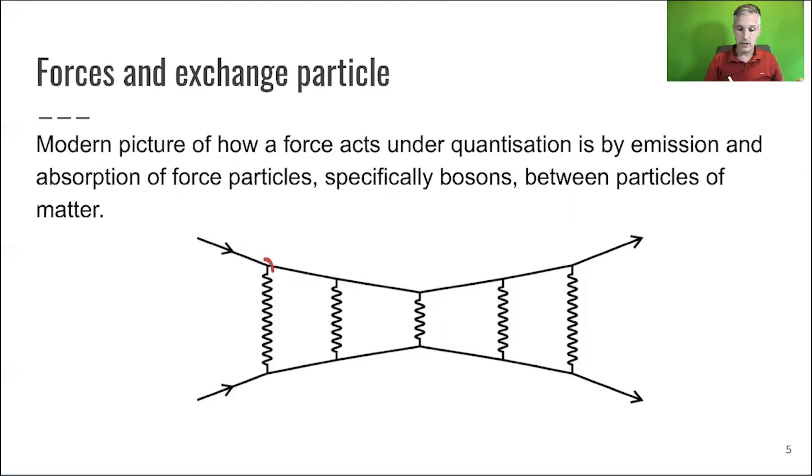And you see this here. So this electron comes along, maybe emitting a photon. This electron here emits it. And by this exchange of emission and absorption of photons, those two particles, the electrons, see each other.